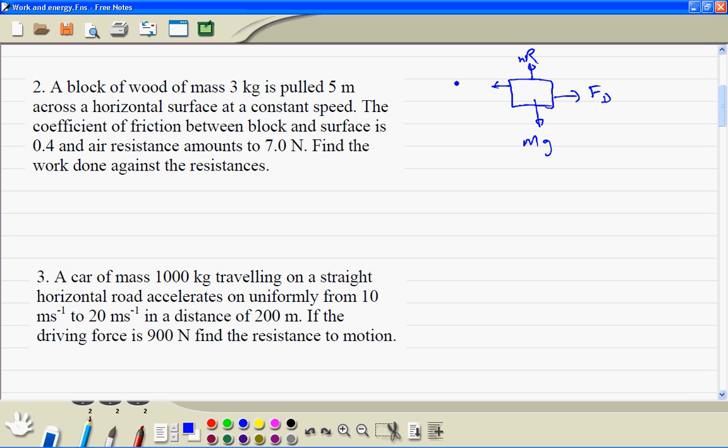This is the force due to air resistance, and this is the friction force. So the total driving force, because there's no acceleration, is equal to 7 plus 0.4 times m times 9.8, which is equal to 18.76.